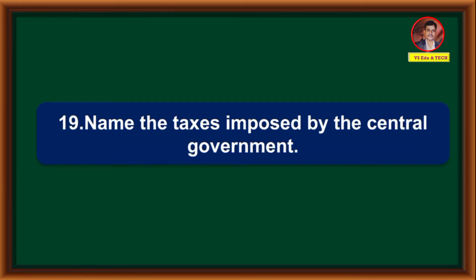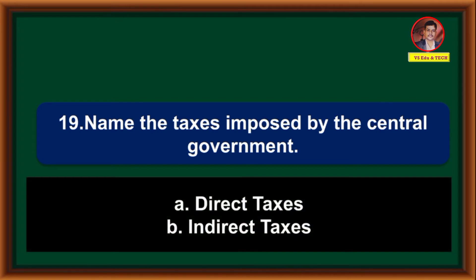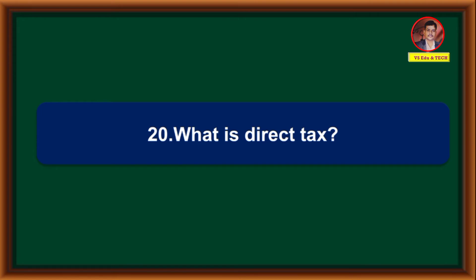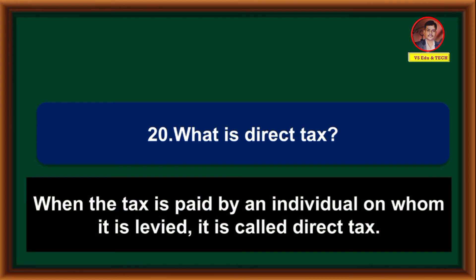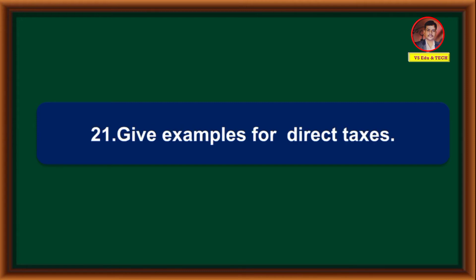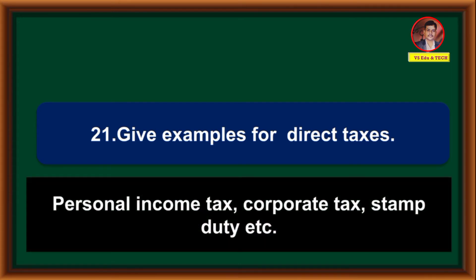Name the taxes imposed by the central government: direct taxes and indirect taxes. What is direct tax? When the tax is paid by an individual on whom it is levied, it is called direct tax. Examples of direct taxes: personal income tax, corporate tax, stamp duty, etc.